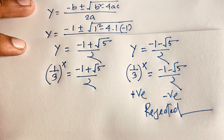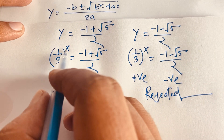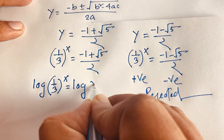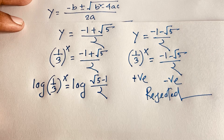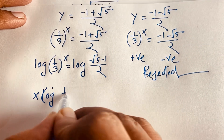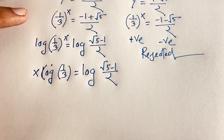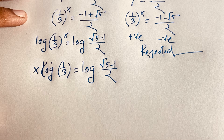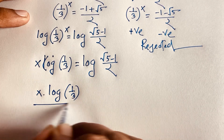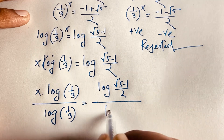So we have (1/3) to the power x equals (negative 1 plus square root of 5) over 2. To find x, I take the natural log of both sides. Applying the logarithm power rule, x moves to the front: x times log(1/3) equals log of (square root of 5 minus 1) over 2. Dividing both sides by log(1/3), the log(1/3) terms cancel on the left, giving x equals log((square root of 5 minus 1)/2) divided by log(1/3).